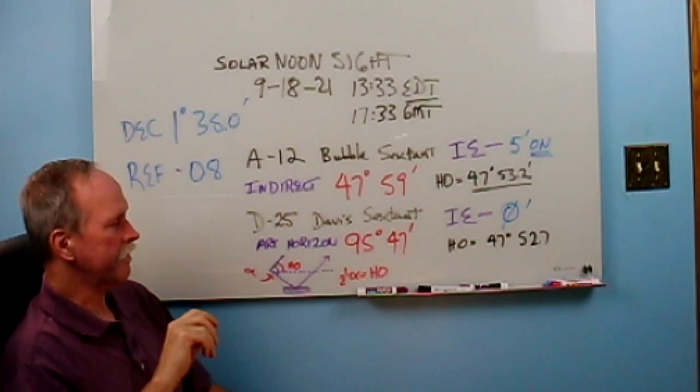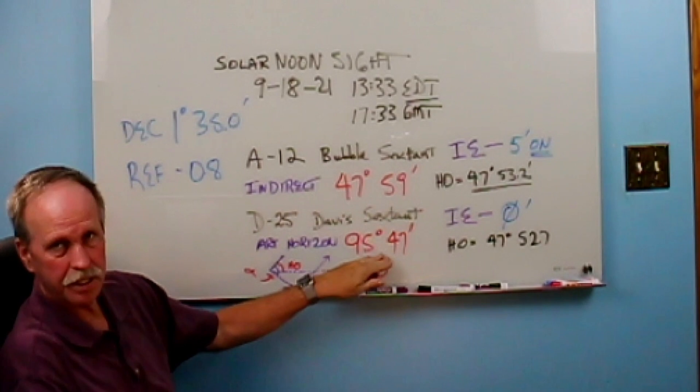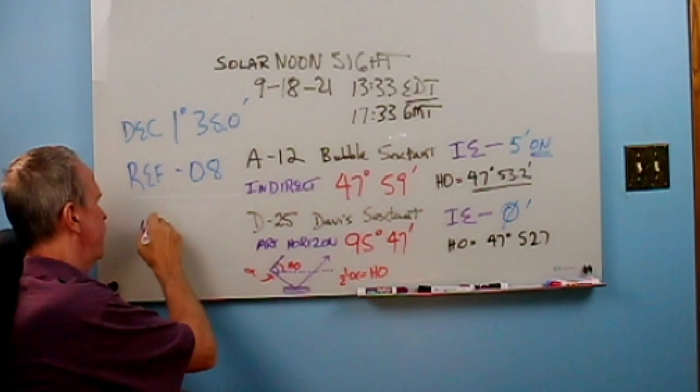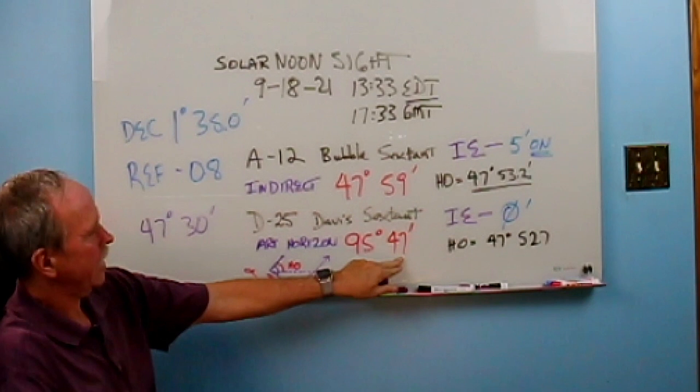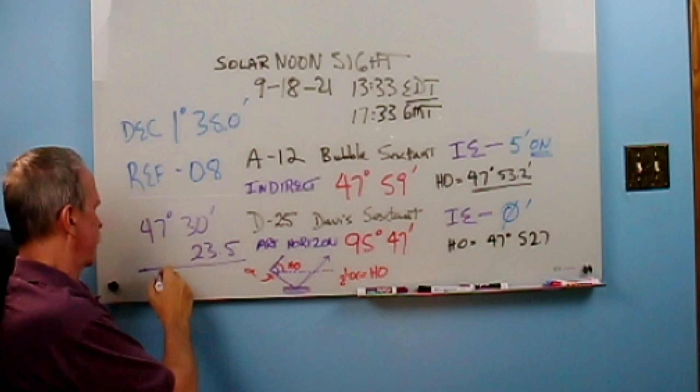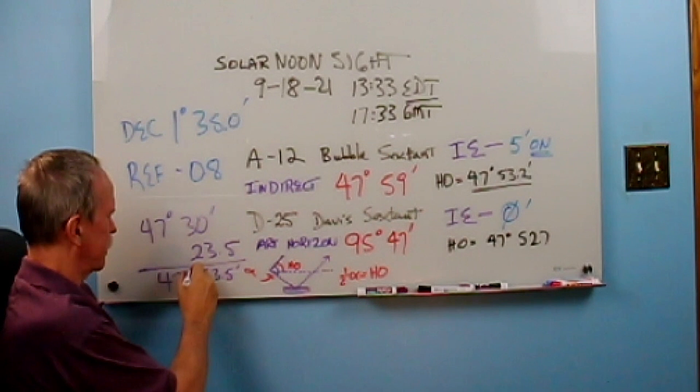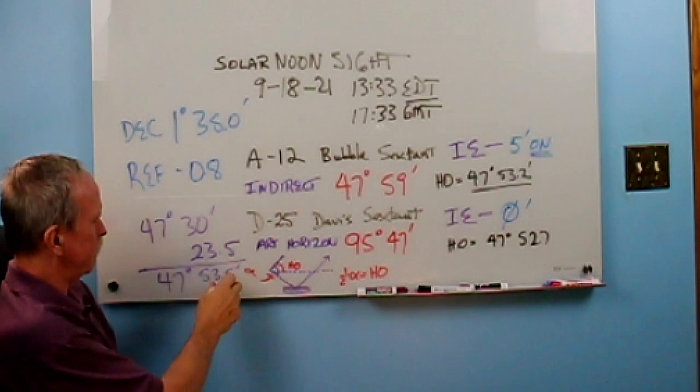Now with the Davis sextant, it's a little bit more difficult because we're reading twice the angle due to the fact that we used an artificial horizon. So the first thing that we're going to need to do is cut this angle in half. Now half of 95 degrees would be 47 degrees, 30 minutes. Multiply that by 2, you get 95 degrees. To that, we had half of 47 minutes, which is 23.5 minutes. Now this gives us a total of 47 degrees, 53.5 minutes. To that, we have to subtract our refraction, which is 0.8 minutes. So this 53.3 is going to be 52.7. And we've got that recorded right here.